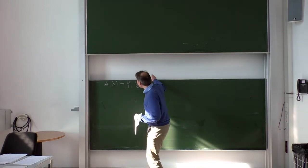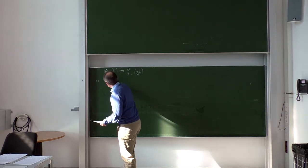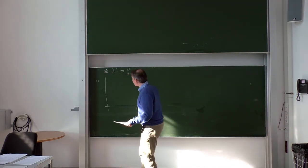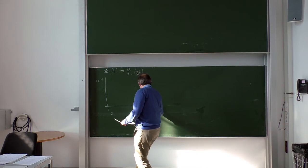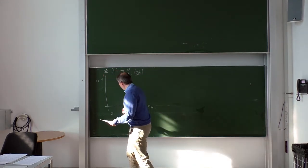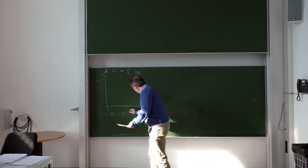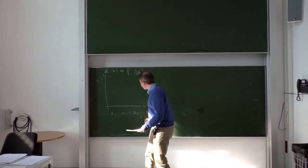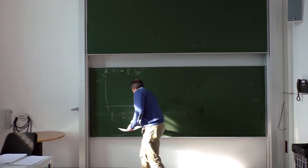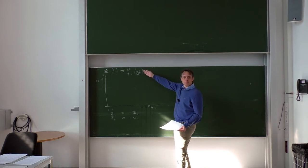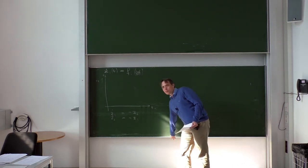Now let us do some examples. Example one: let's say we have two variables, z1 and z2. We invent a law: z1 dot is equal to minus z2, and z2 dot is equal to plus z1. This is a law compatible with the general rule for dynamical systems, so we have defined a very simple two-dimensional dynamical system.